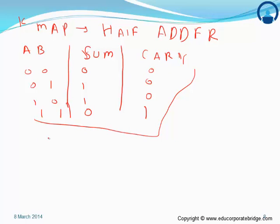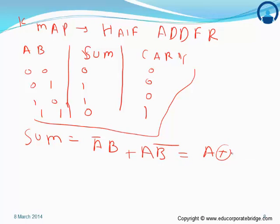If we make the K-map for the sum, we get the equation A-bar·B plus A·B-bar, which equals A XOR B. We can verify from the truth table: 0 XOR 0 = 0, 0 XOR 1 = 1, 1 XOR 0 = 1, 1 XOR 1 = 0. Therefore the sum represents the XOR gate. Similarly, the K-map for carry gives the output as A·B.